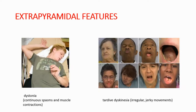We can also see extrapyramidal features in severe toxicity. Examples of extrapyramidal features are dystonia and tardive dyskinesia. In dystonia, you can see continuous spasms and muscle contractions in the patient's body. In tardive dyskinesia, we can see irregular jerky movements. You should know that tardive dyskinesia can also be seen with antipsychotic usage.